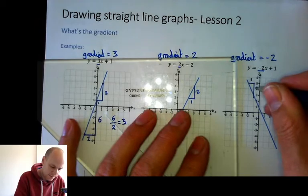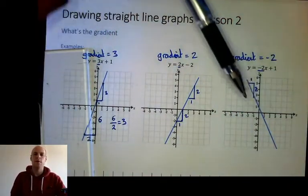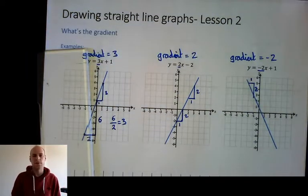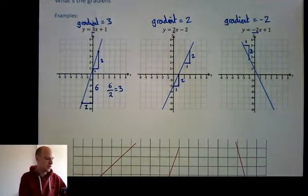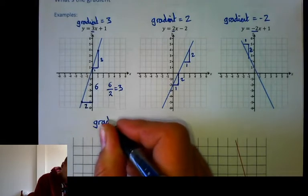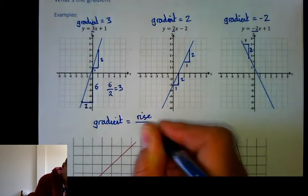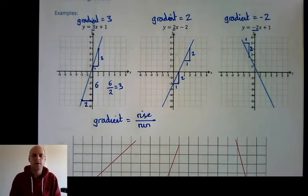So for every one you go across, you're going up by three. And over here, for every one that you're going across, you go up by two. This one here, for every one that you go across, you go down by two, which is why it is negative two. You need to remember that if the graph points downwards, it's going to have a negative gradient. And if the graph points in this direction, it's got a positive gradient. So write down this formula: gradient is equal to the rise divided by the run.